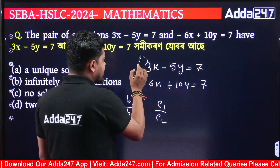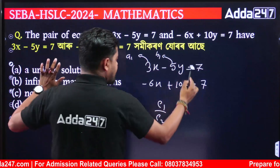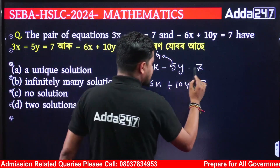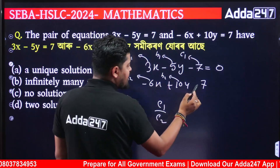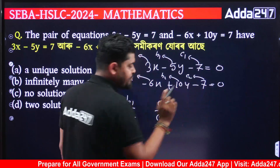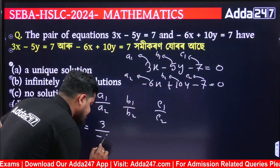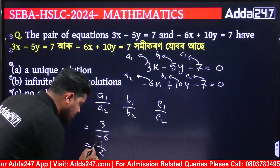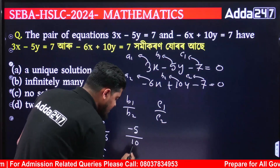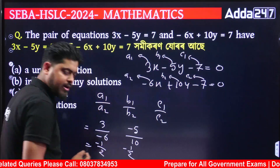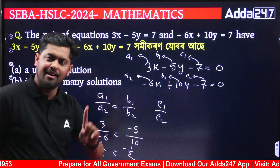A1 is 3 and A2 is minus 6, so A1 by A2 equals minus one half. B1 is minus 5 and B2 is 10, so B1 by B2 equals minus one half. We have A1 by A2 equal to B1 by B2.